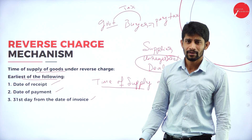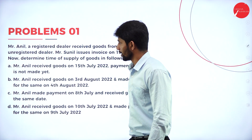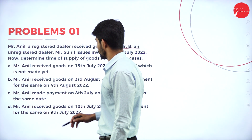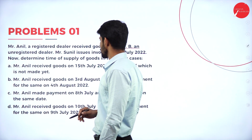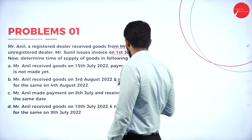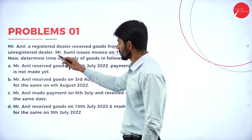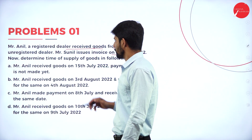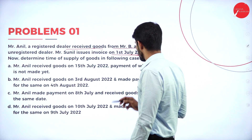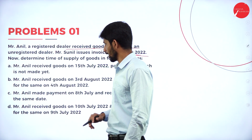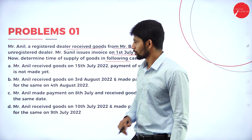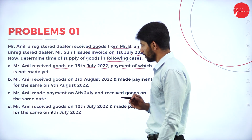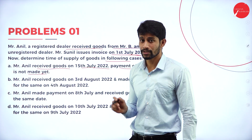Now let us solve one problem. Mr. Anil, a registered dealer, received goods from Mr. Sunil, an unregistered dealer. Mr. Sunil issues invoice on 1st July 2022. Determine the time of supply of goods in the following cases. Case A: Mr. Anil received goods on 15th July 2022 and payment has not been made yet. Case B: Mr. Anil received goods on 3rd August and made payment on 4th August. Case C: Anil made payment on 8th July and received goods on the same date. Case D: Mr. Anil received goods on 10th July and made payment on 9th July.